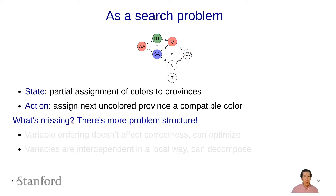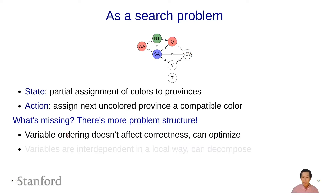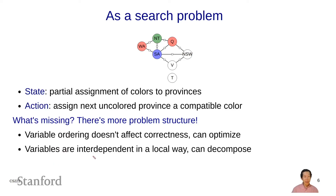Notice that in this problem there's just a bunch of provinces that need to get assigned colors, and it doesn't matter which order we assign them. The variable ordering doesn't affect correctness, which means we can not only use a fixed ordering but also optimize the ordering — and this is something an inference algorithm can do for us. Second, the variables are interdependent in only a local way, so we can decompose the problem. For example, Tasmania is completely separated from the rest of Australia, meaning we can solve two independent sub-problems separately and combine the solutions, which really speeds up search.